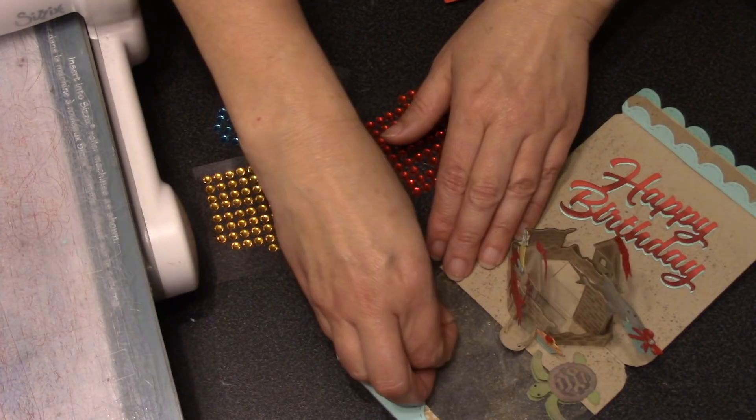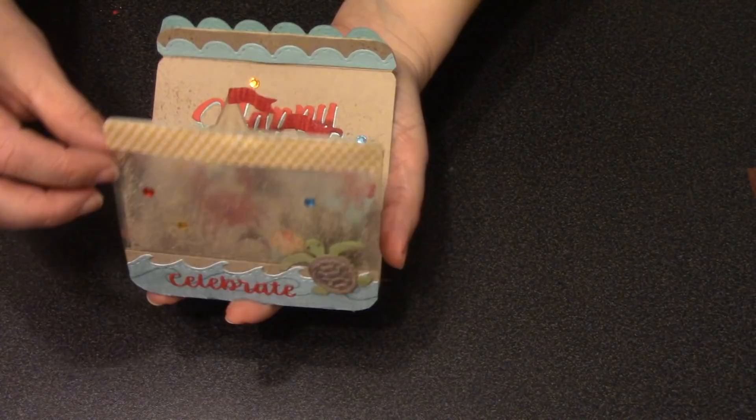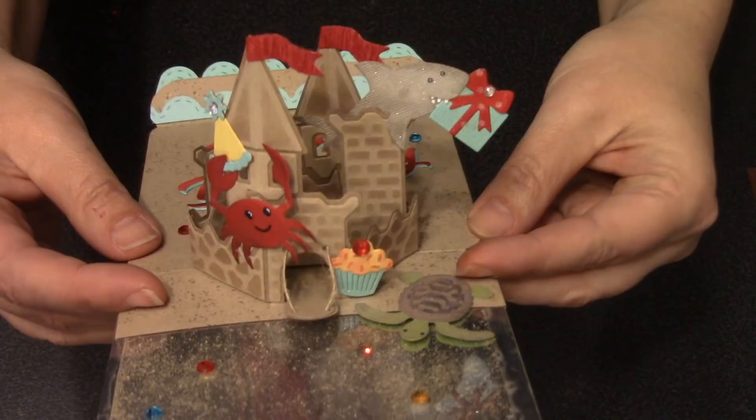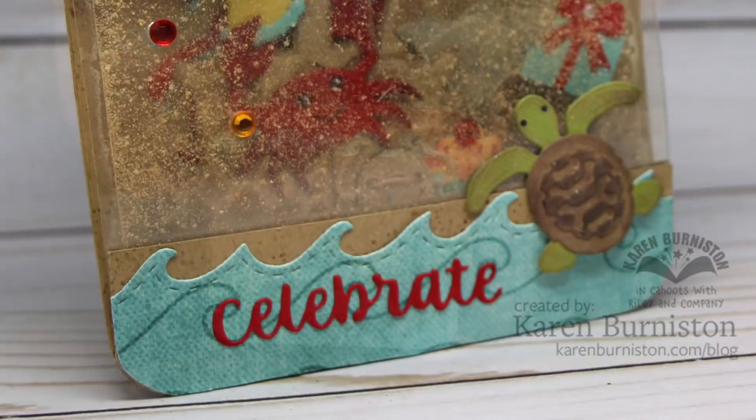I love how this card turned out—that hint when the card is closed of the magic inside, and then you open it and you've got this great sandcastle with a party going on. The card measures 4.5 inches square when it's closed, so it will mail easily in an A7 envelope and shouldn't cost any additional postage.